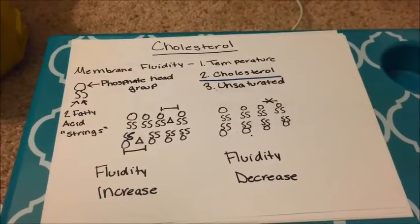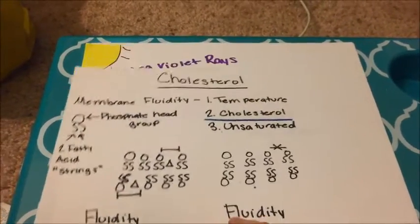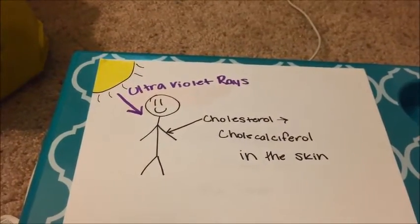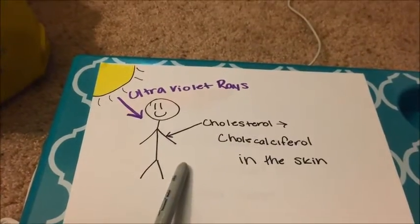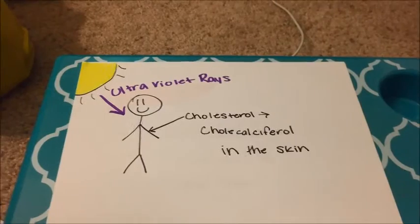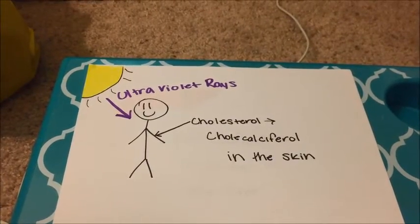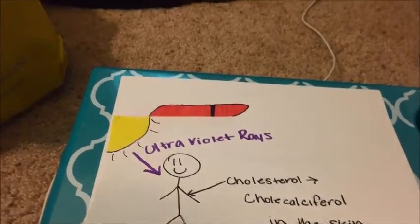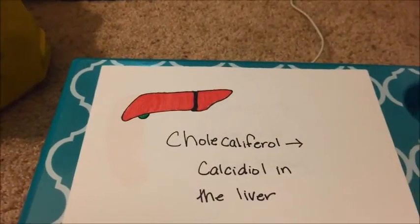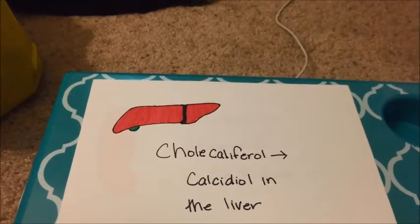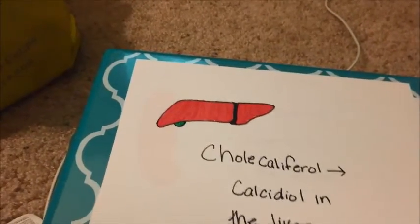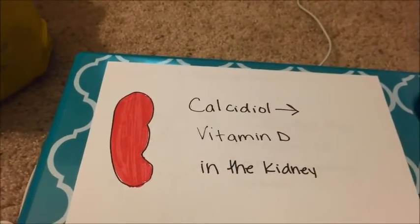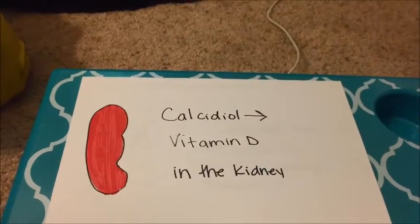So now that we have a little review of cholesterol, let's go into the actual synthesis of vitamin D. Vitamin D is made from when ultraviolet rays from the sun enter the skin. When ultraviolet rays enter the skin, it causes cholesterol to be converted into cholecalciferol. Cholecalciferol will then travel from the skin via the bloodstream to the liver, where it's made into calcidiol. Calcidiol will then enter the bloodstream again and go to the kidneys, where it is converted into vitamin D.